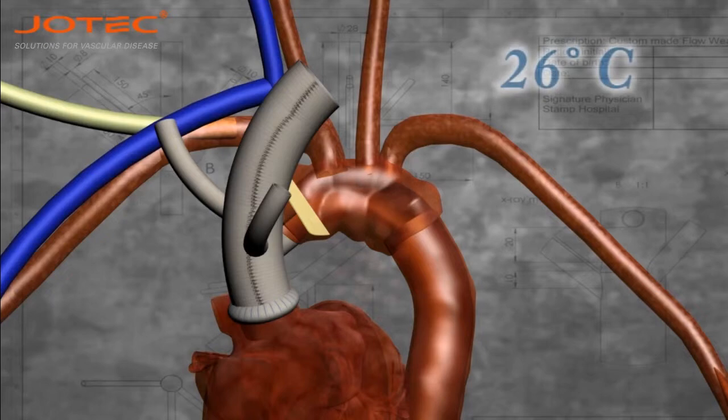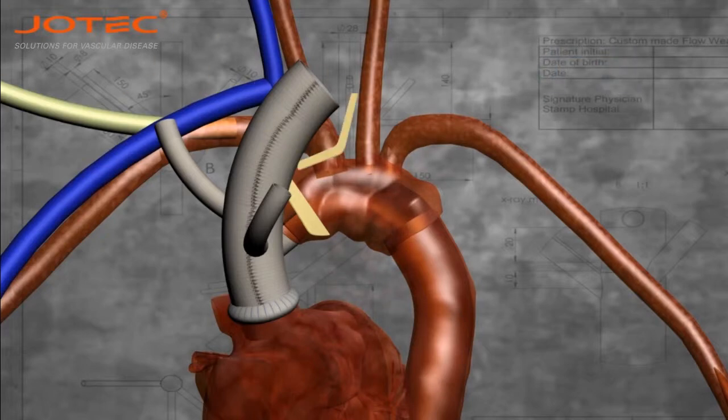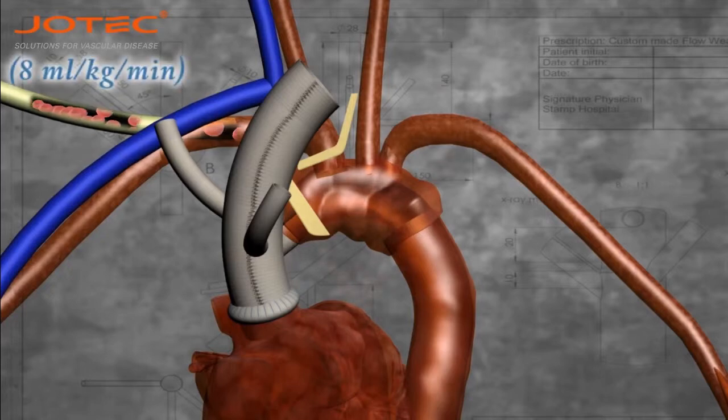Once the patient reaches 26 degrees Celsius, proceed with the circulatory arrest and the clamping of the innominate trunk. Then the right carotid artery will be perfused through the cannula placed in the right auxiliary artery.